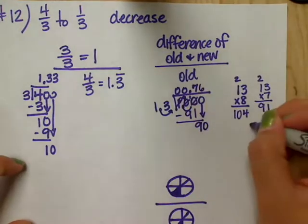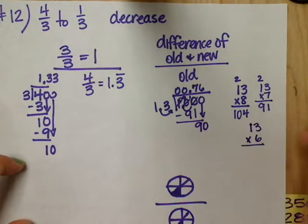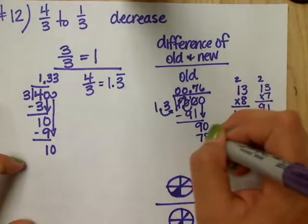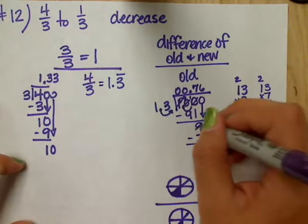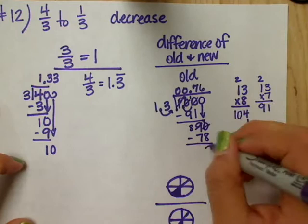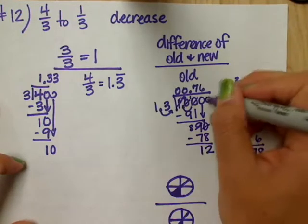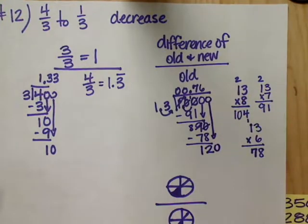It would have to be six times, because seven would be 91. So it goes in six times, so 13 times 6. Six times three? 18. I'm glad one person's awake. Six times one is six, plus one is seven. That's 78. Subtract. Ten minus eight? Two. Eight minus seven? One. Add a zero. Bring it down.